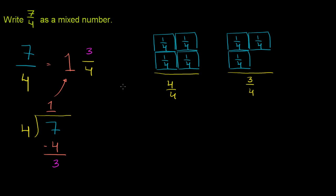Notice, 7 over 4 is 4 fourths with 3 fourths left over. So let me write it this way: 7 over 4 is 4 fourths with 3 fourths left over. Now, what is 4 fourths?